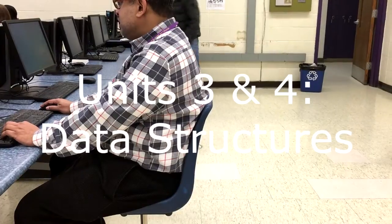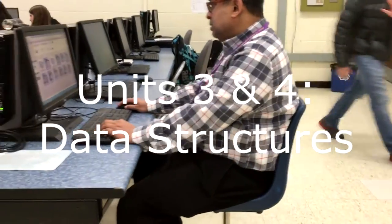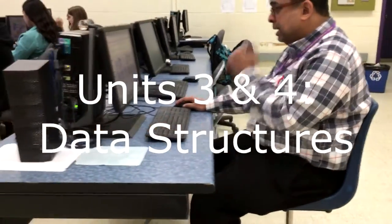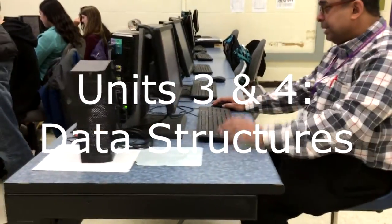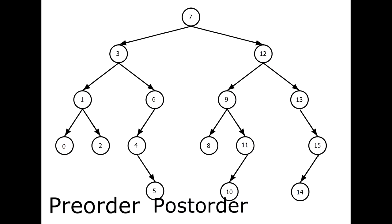Units 3 and 4 begin our in-depth discussion of data structures, the largest topic covered by this course. We will learn how to traverse binary trees, such as the one you see here, in three separate ways: preorder, post-order, and in-order.